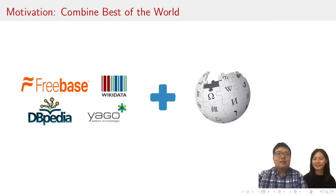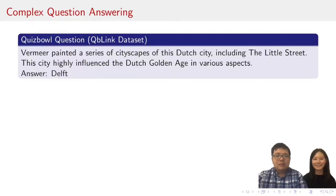Funny you should ask. We would need free texts for a more diverse set of evidence and to go along with it. We would need a way to reason over these relationships. How about constructing a knowledge graph from scratch, say from the free text, so we could do structural reasoning on it? Sounds good. Let's take the same example to check our understanding. Vermeer painted a series of cityscapes of this Dutch city, including the Little Street. This city highly influenced the Dutch Golden Age in various aspects.